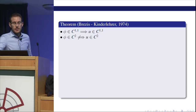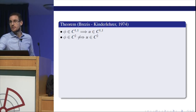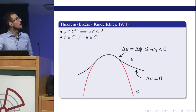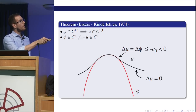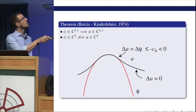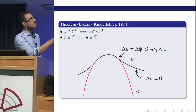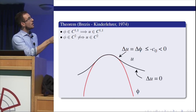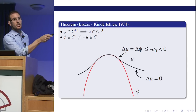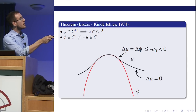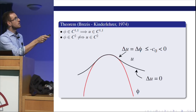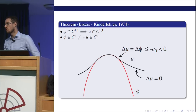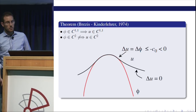It's also important that you cannot go above C1,1 — C2 is false. The reason solutions are not C2 is simply explained by this picture. Take your obstacle phi to be a nice concave function; the Laplacian of phi will be strictly negative. On the contact region, the Laplacian of U and phi coincide, so the Laplacian of U is strictly negative. Outside the contact region, the Laplacian of U is zero. So the Laplacian has a jump, meaning U cannot be C2. So C1,1 is optimal.